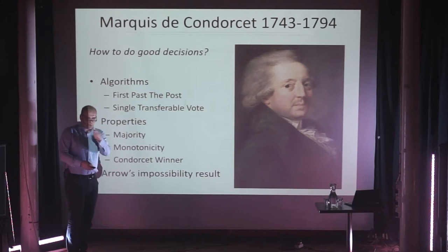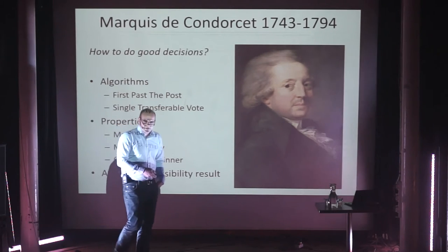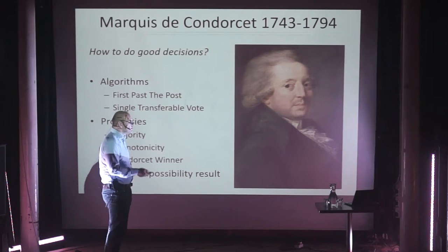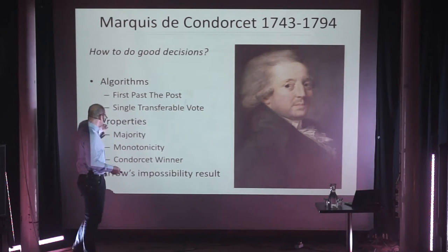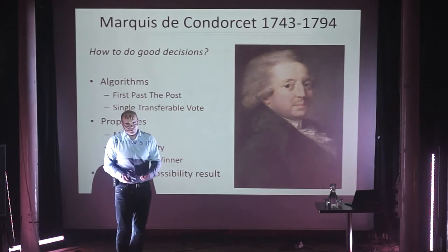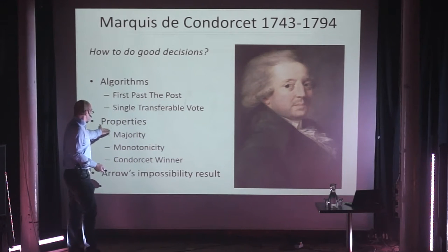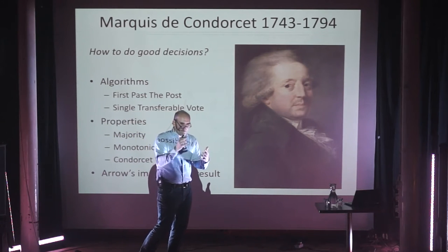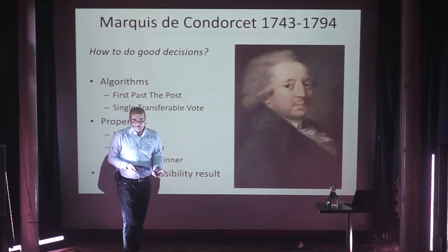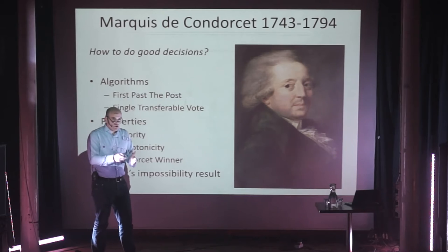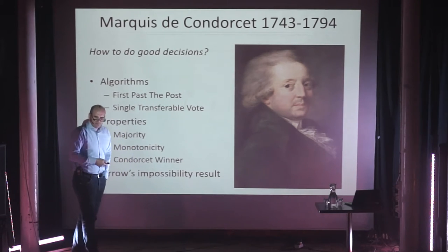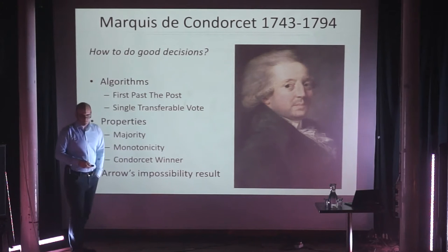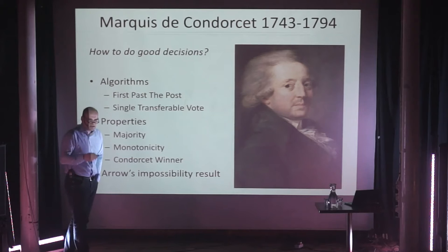Condorcet analyzed different properties of voting. For example, the majority property: the candidate who gets the most first preferences should win. Monotonicity is another interesting property: if you move a vote to someone, the person who gets more votes should not suddenly lose. Unfortunately, that is a property that certain single transferable vote systems don't have. Even in the German election system, when somebody gets more votes, they might unfortunately lose a seat. These are worrisome things.